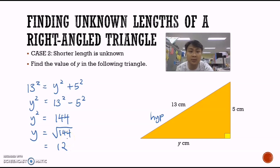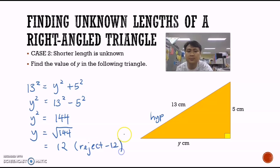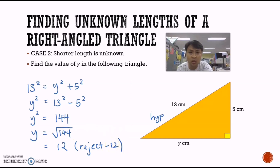Our answer is y equals 12. Again, whenever we take the square root, we have two possible answers, but because length is always positive, we reject negative 12. Writing down 'reject negative 12' indicates to the examiners that you know there is a negative answer, but because length is always positive, you are rejecting it.